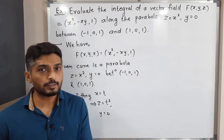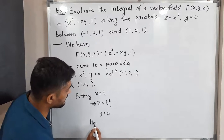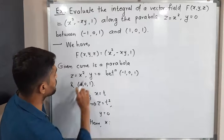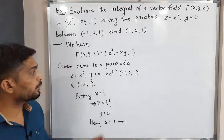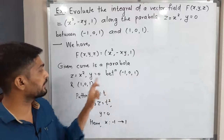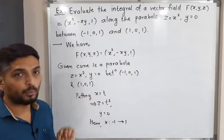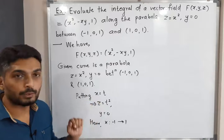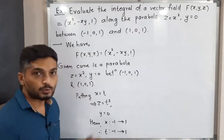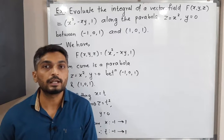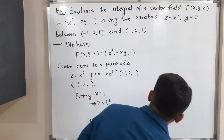Now we are interested in the limits. You can see that x varies from -1 to 1, y varies from 0 to 0, and z varies from 1 to 1. Since x = t, therefore t also varies from -1 to 1. With this information we can easily find the parametrization of the given curve C.